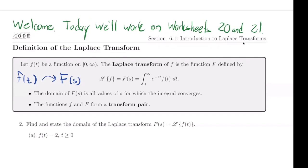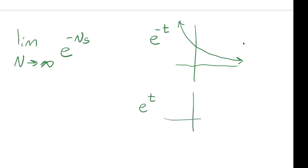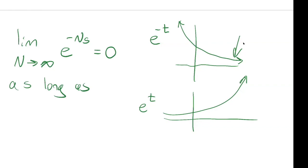In general, if we have e to the negative T, the graph converges to zero. If we have e to the positive T, it diverges. So as long as the power is negative, as T goes to infinity, it's going to converge to zero. You can justify this by saying it equals zero as long as S is bigger than zero.